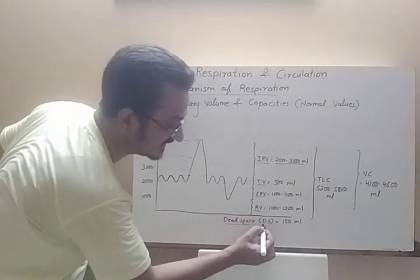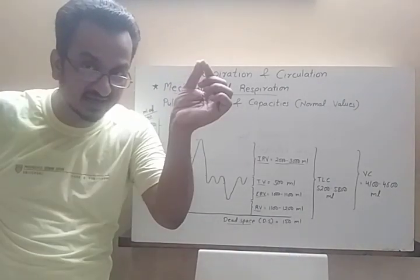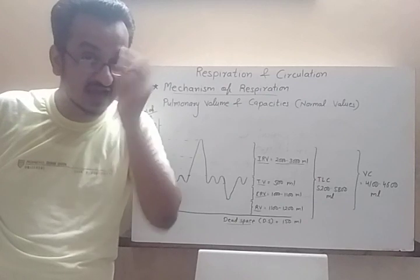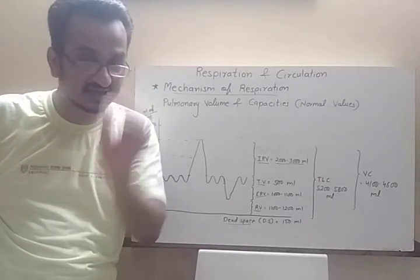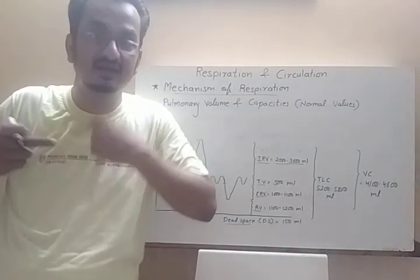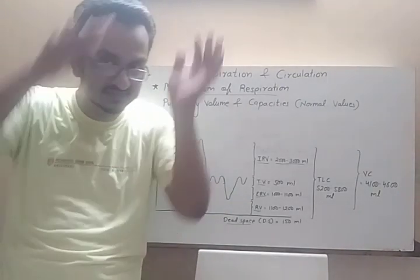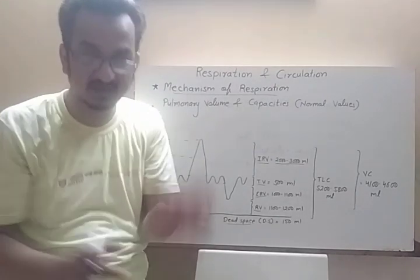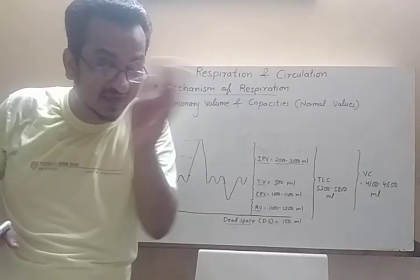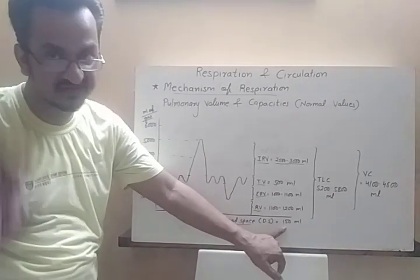There is also dead space, approximately 150 ml. This is the gas present in the respiratory tract — from the nasal cavity through the pharynx, larynx, trachea, bronchi, secondary bronchi, tertiary bronchi, bronchioles, and alveoli. This gas in the respiratory passages does not participate in gaseous exchange or diffusion, but it is still present in the pipeline. Dead space volume is 150 ml.